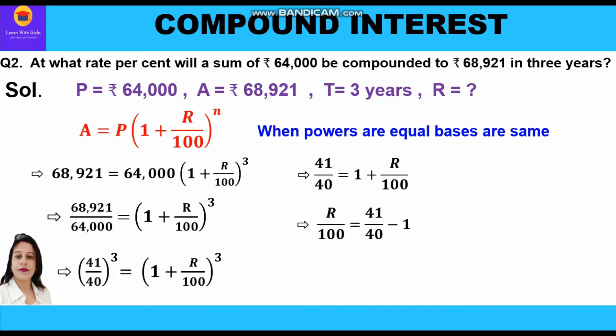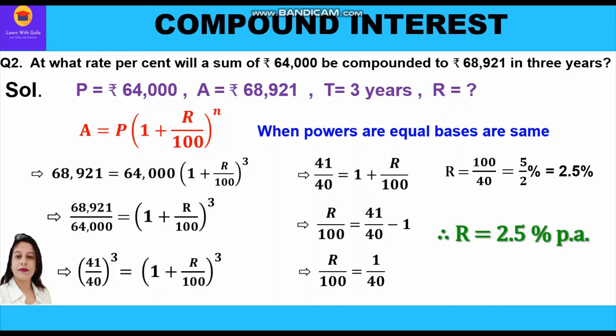Taking 1 to the other side it becomes minus 1, so r upon 100 is equal to 41 upon 40 minus 1. Taking LCM: 41 minus 40 gives 1, so r upon 100 is equal to 1 by 40. Cross multiplying: r is equal to 100 upon 40, which is equal to 5 by 2 percent, or 2.5 percent. So the rate of interest per annum is 2.5 percent. This is our final answer.